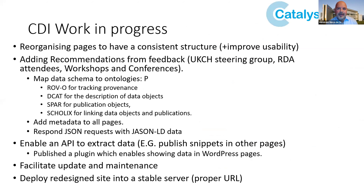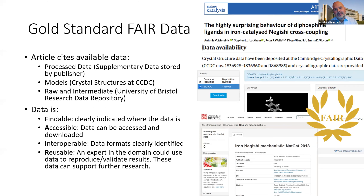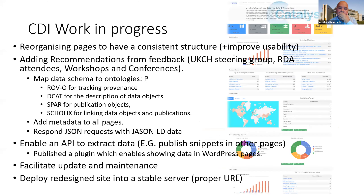The current status is being published and is available. We are reorganizing the pages, adding metadata so that content can be shown, and using ontologies we have identified. We already respond with JSON and will try to implement JSON-LD so that it can contain semantic information as well. We have enabled part of the API used for extracting publications and feeding them to the Catalysis Hub WordPress site.